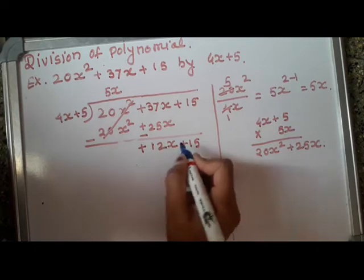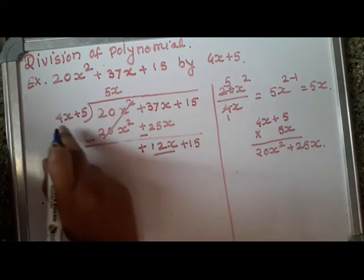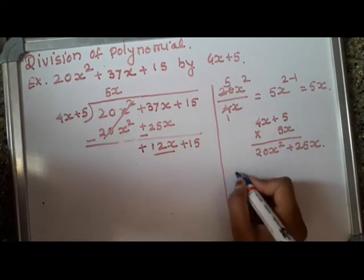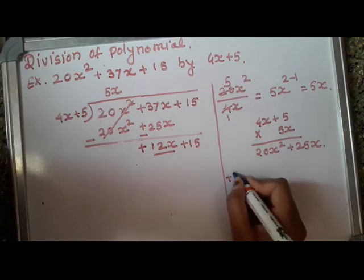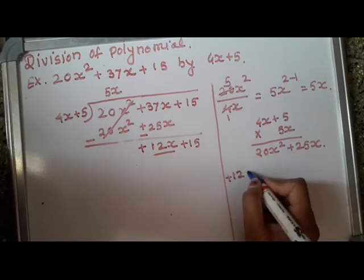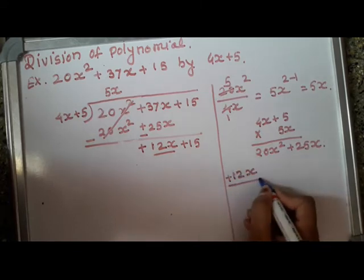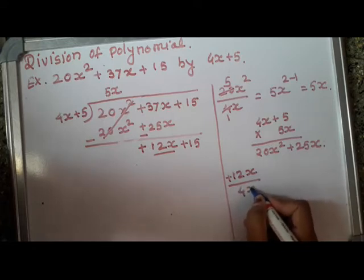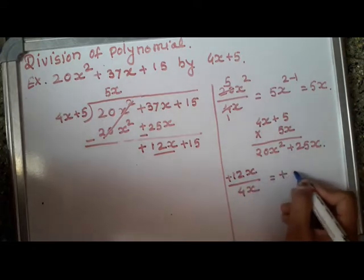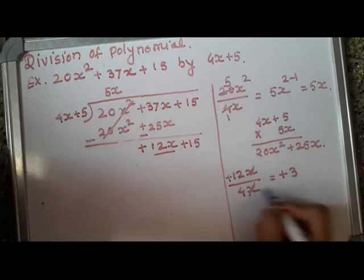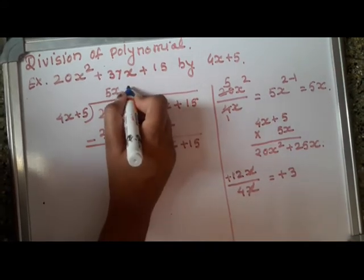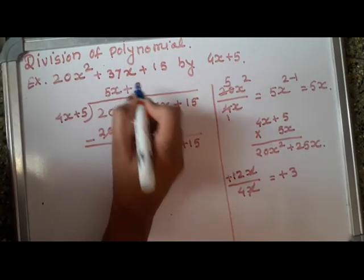It will become plus 12x plus 15. Now again we will do the same. This 12x we will divide it by 4x, plus, don't forget the sign plus. Plus 12x divided by 4x, it will become plus 3. xx will get cancelled.